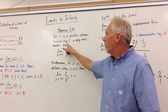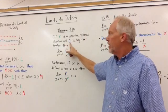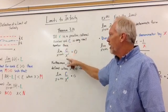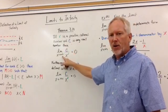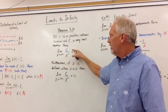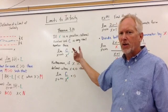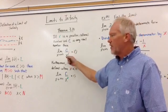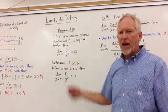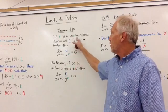So if r is a positive rational number and c is any real number, then the limit as x goes to infinity of c over x to the r will be zero.